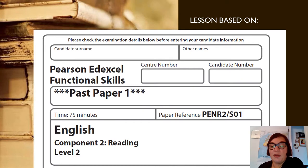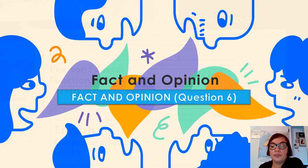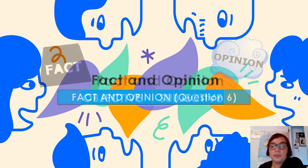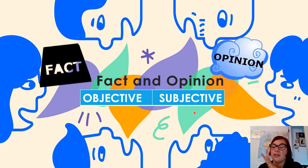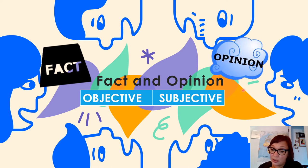We're referring to this paper. Question 6: fact and opinion. Facts are objective — you could say scientific, looking at something from a distance — and opinions are subjective to the person, and they often involve emotions.